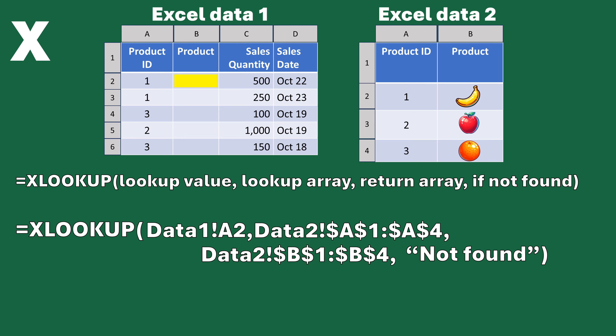Now we've completed the XLOOKUP formula. When we paste it into cell B2, it works just like VLOOKUP did — it returns the banana, the orange, the apple, and the orange again, just as before. But I really do believe that if you give XLOOKUP a chance, you're going to find it's a much better and more powerful tool compared to VLOOKUP.